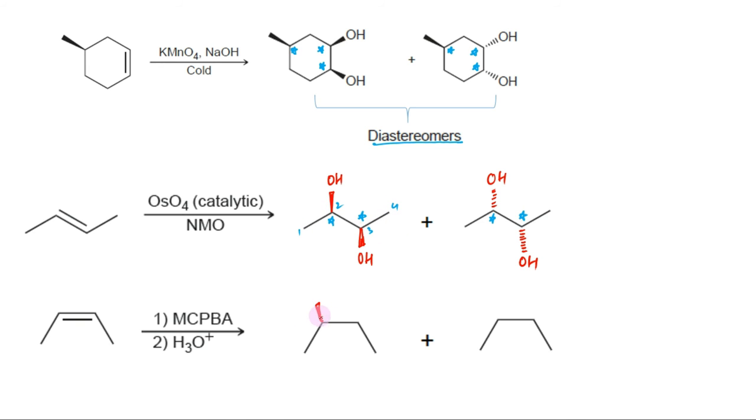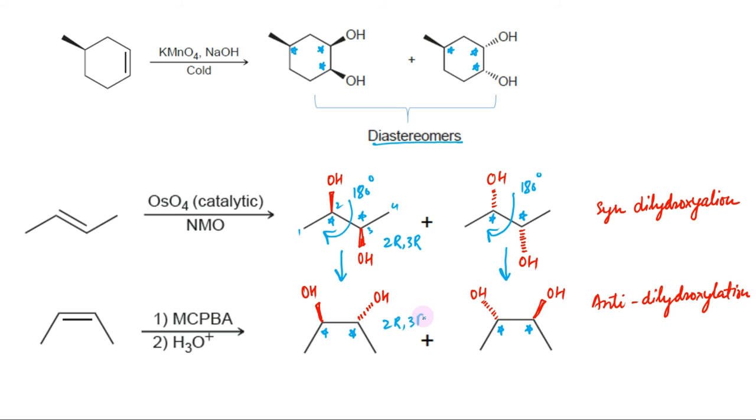Anti-dihydroxylation of cis-2-butene gives enantiomeric pair as product. Thus this is syn-dihydroxylation and this is anti-dihydroxylation. Recall that this can be converted into this via 180 degrees rotation. Same can be done in this case. The configuration of each chirality center can be assigned to demonstrate that the products are indeed the same for these two reaction sequences. This compound is 2R, 3R whereas this is also 2R, 3R. Thus these two compounds are same. Thus syn-dihydroxylation of a trans-2-butene results in the same products as anti-dihydroxylation of a cis-2-butene.